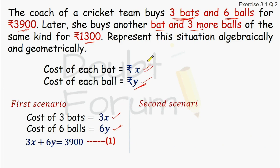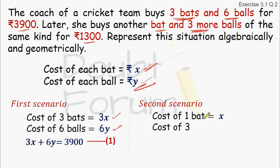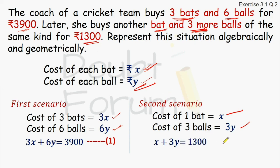Now we will move to the second case. In the second scenario, the coach is buying 1 bat and 3 more balls. So the cost of 1 bat will be X rupees and the cost of 3 balls will be 3Y. The question says the price for 1 bat and 3 balls is Rs. 1300. So X + 3Y = 1300. This is our equation number 2. We have now represented the situation algebraically using these two equations.